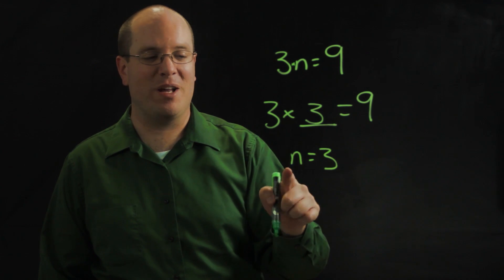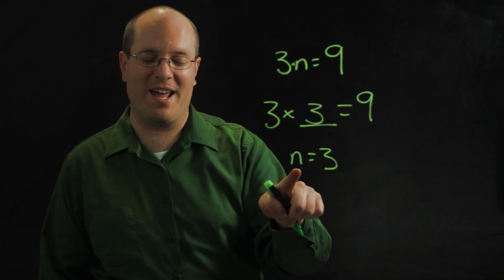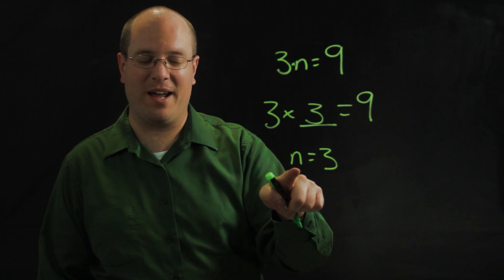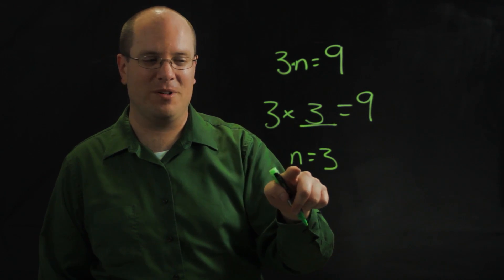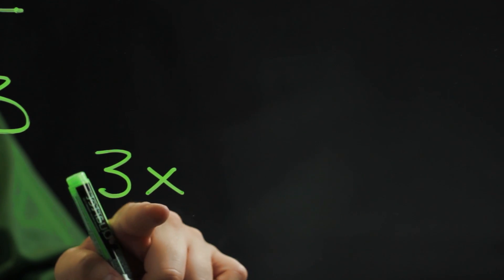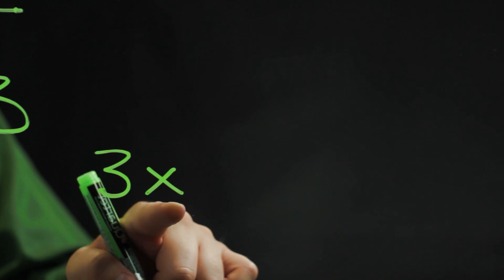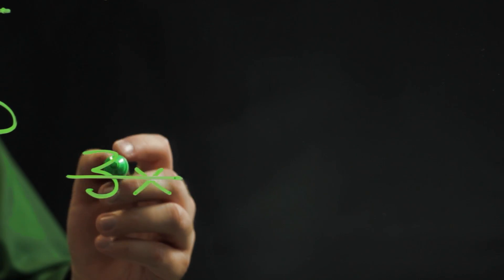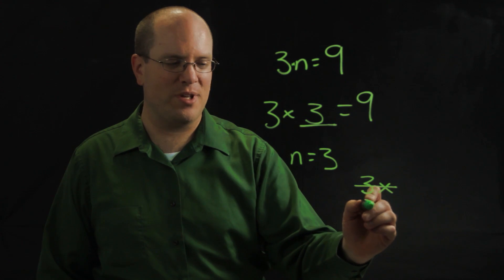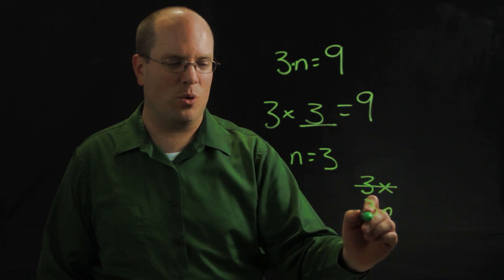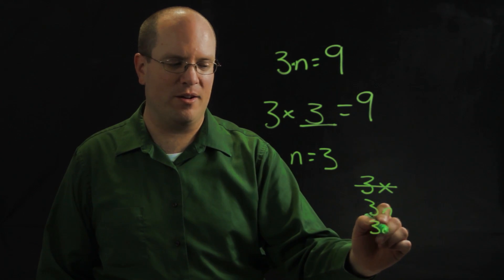I highly recommend you use n or maybe a instead of x for your variable. If you use an x, elementary students will read that as three times — to them, the x is a times sign. So you don't want to get them confused. Save that for maybe junior high. Use n or a for that unknown.